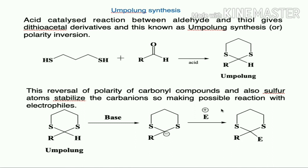If the umpolung product (dithioacetal) is treated with a strong base, a carbanion intermediate is formed. This carbanion intermediate undergoes reaction with different electrophiles to form the corresponding products. The key question is then how to remove the dithioacetal group to obtain the target carbonyl or hydrocarbon derivative.